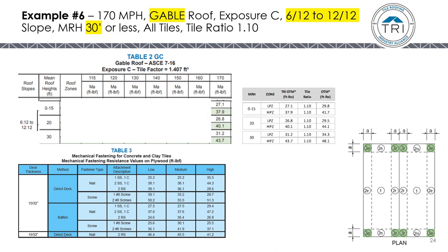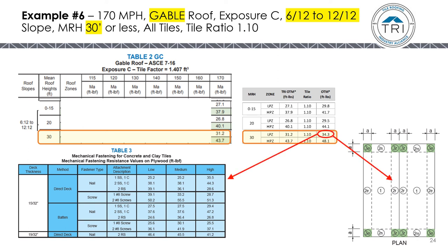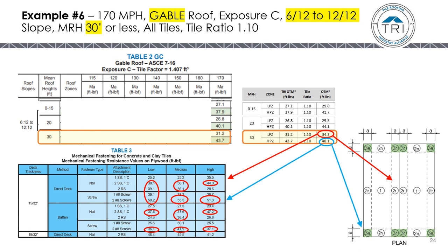In example six, we look at a steep gable roof, 6:12 to 12:12. We go to Table 2GC and get our uplift moments for both the LPZ and HPZ. We factor in the tile ratio, then look at the LPZ — Table 3 shows the methods that can be used to mechanically fasten tile. We also look at the HPZ and find the mechanical methods that can be used there.